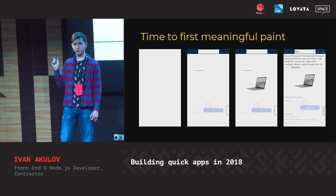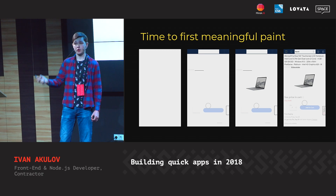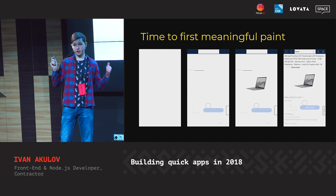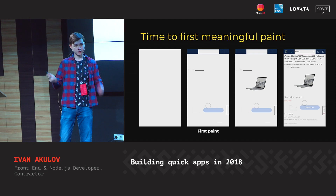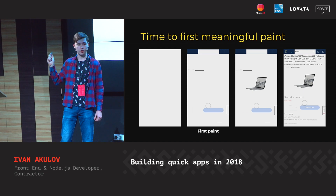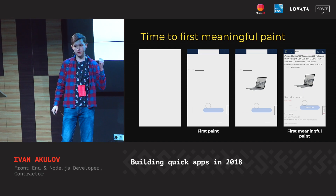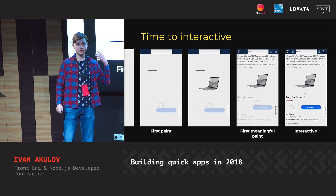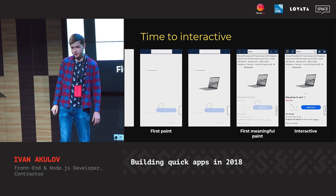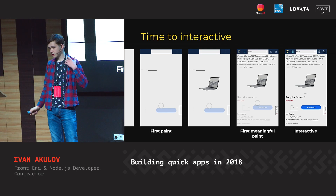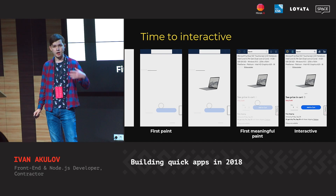What do they mean? Time to first meaningful paint is how quickly the page loads from the start until the first meaningful content is rendered. Meaningful content is the content the user came for. Time to interactive is how quickly the page becomes interactive — how quickly the user can start using the page since they start loading it. These metrics are important because they represent the user's intentions: the user comes to your site to first read something and then to use something.